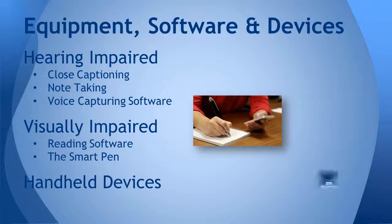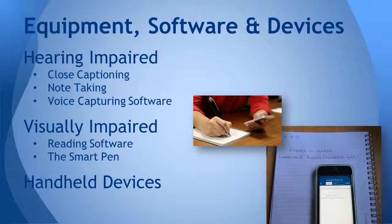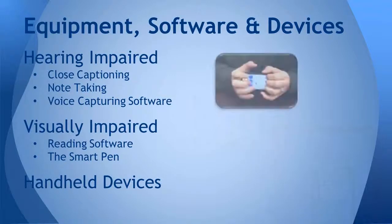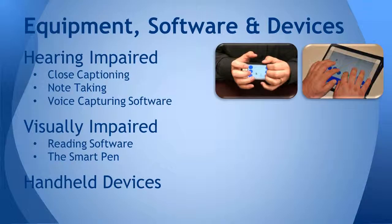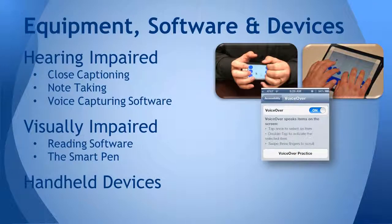Expect continual evolution of handheld apps which meet disabled students' needs, like Braille Touch for iPhone and iPad. Visually impaired users type in braille symbols, which are converted to alphanumeric text. These devices also have VoiceOver, which provides a text-to-speech function for e-books and internet browsing.